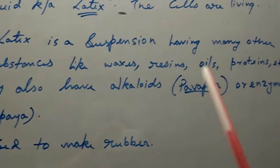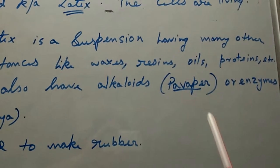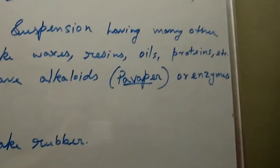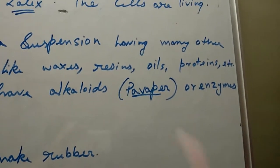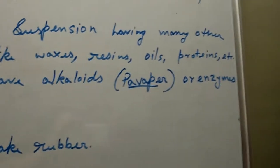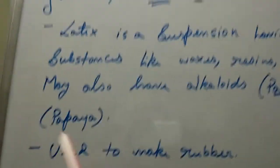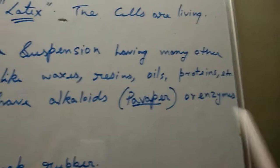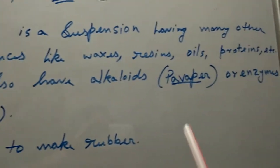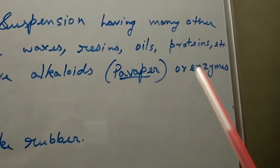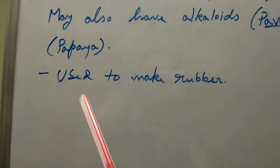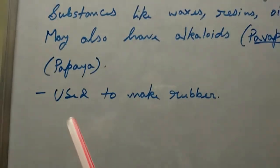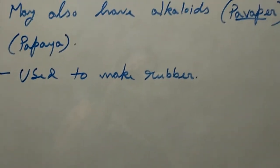Latex is a suspension containing many other substances like waxes, resins, oils, proteins, etc. It may also have alkaloids, as in the example of Papaver — commonly known as poppy — which is a sedative plant from which we get sedative drugs. Latex can also be used to make rubber.